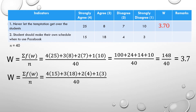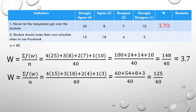For indicator two, we compute: (4×15) + (3×18) + (2×4) + (1×3) over 40. That gives us 60 + 54 + 8 + 3 = 125. Dividing 125 by 40 gives us a weighted mean of 3.13. Now the question is: what would be the remark for each indicator? We need to establish an interval first.